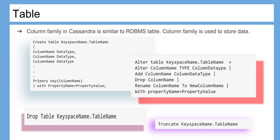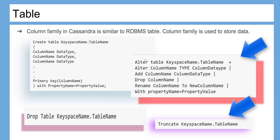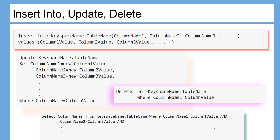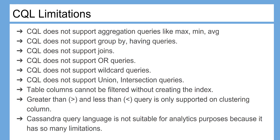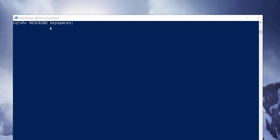Let's see them in action. Here is how to define and create tables in Cassandra, including table operations such as insert, update, and delete. CQL has limitations: it does not support aggregation queries like max, min, avg; it does not support GROUP BY or HAVING queries; it does not support joins, OR queries, wildcard queries, or union and intersection queries. Table columns cannot be filtered without an index.